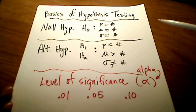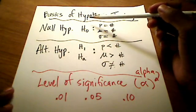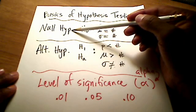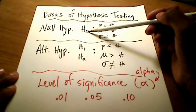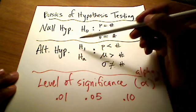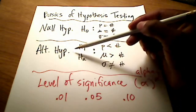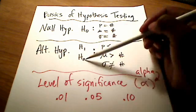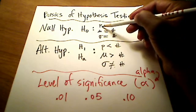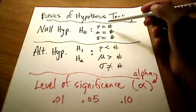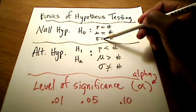No matter what type of hypothesis testing you're using, whether it's the traditional method or p-value method, there's always going to be a null hypothesis and an alternative hypothesis. Most books use H sub zero or H naught for your null hypothesis, and you might see H sub one or H sub A for the alternative hypothesis — they both mean the same thing. The null hypothesis always has an equal sign in it, no matter what you're talking about.